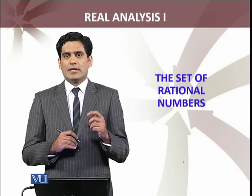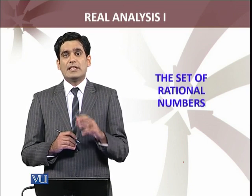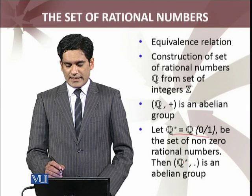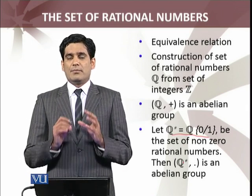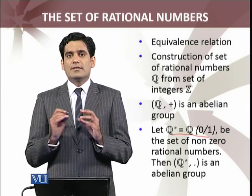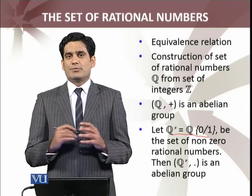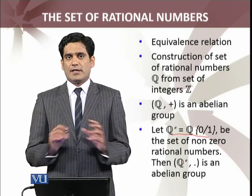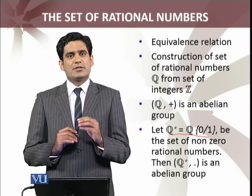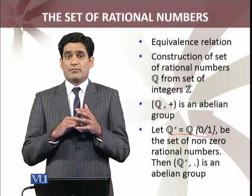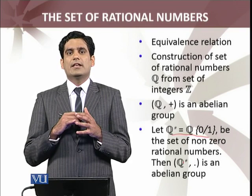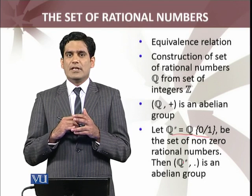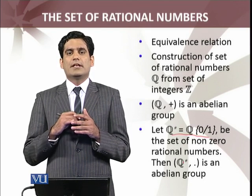In this module we are going to construct the set of rational numbers from the set of integers. The first topic is equivalence relations. A relation from a set to itself, or to another set, is a subset of the Cartesian product A×B. We will define an equivalence relation if it is reflexive — meaning every member of A is related to itself — and symmetric — if a is related to b then b is related to a.